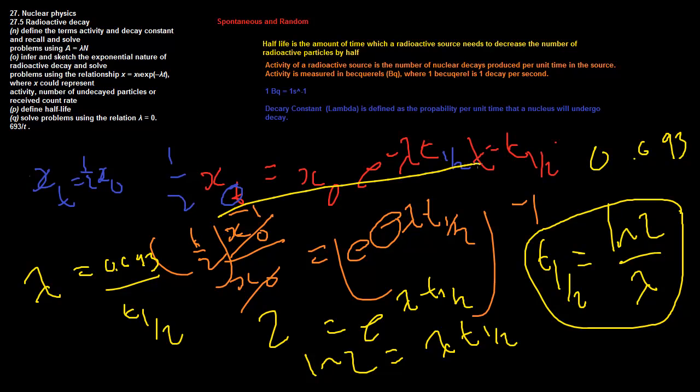So basically, these two formulas here, sorry it's a bit messy now, and these two formulas here in the yellow are what you need to remember. And that's all we need for nuclear physics. Not that difficult. Just a bit more mathematics than we were looking at before.